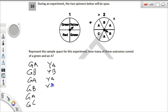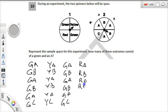And then over here could be red A, red B, red A, red B, red A, red B, red A, red C. So how many of these have a green and an A?